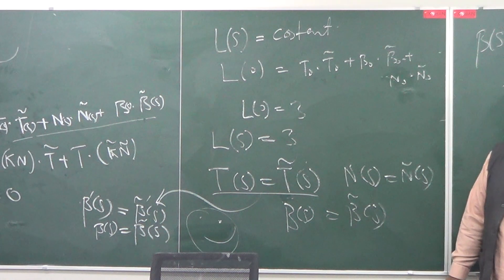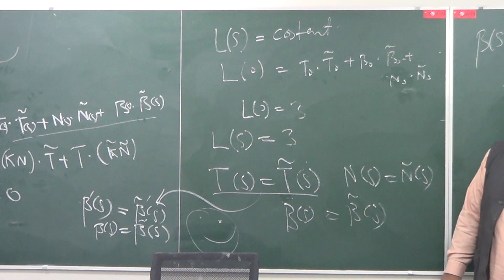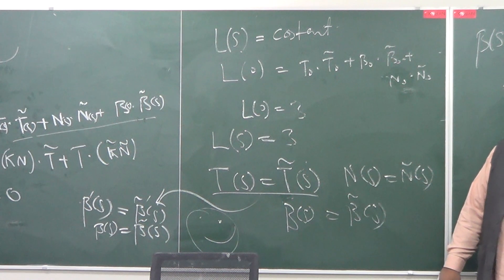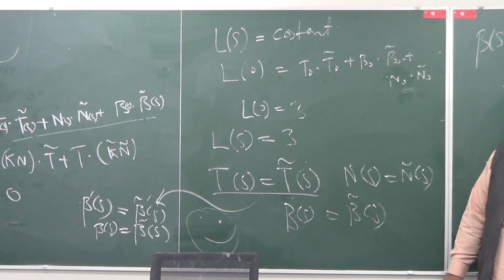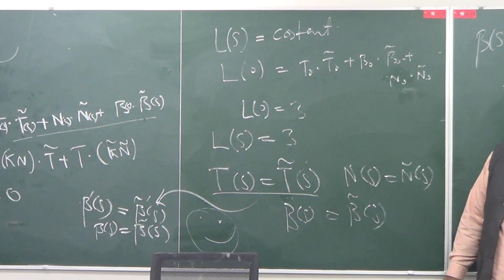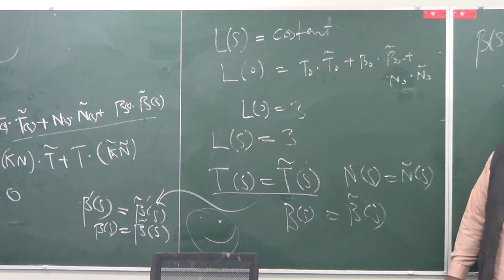At this point we know that t0 and t0θ are parallel. They are not parallel unless we do the rigid transformation. So we will say that t0 and t0θ are parallel to each other.